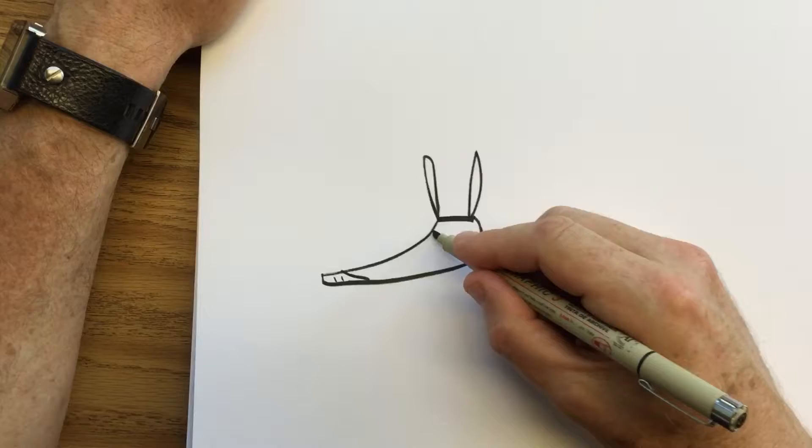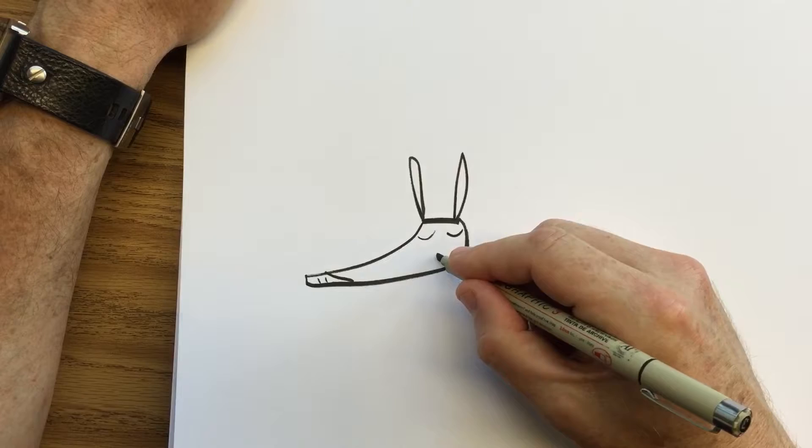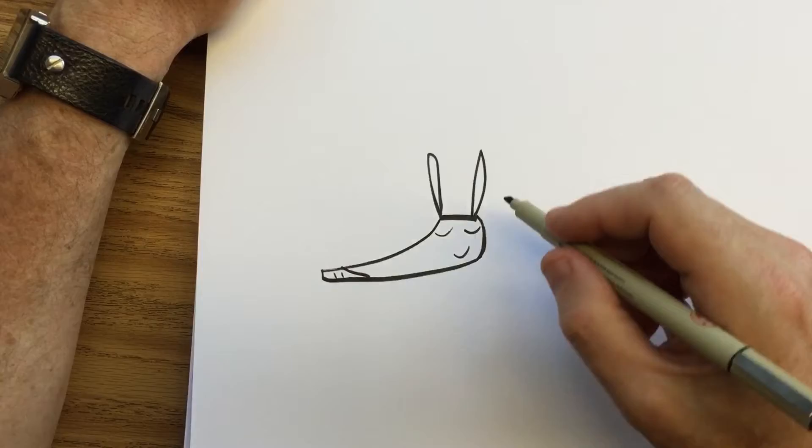Then we're going to draw a smile underneath that leaf, and a smile underneath that other leaf, and then another smile - that's the actual smile. So he's got his two little eyes closed because he's feeling very good about being an armadillo.